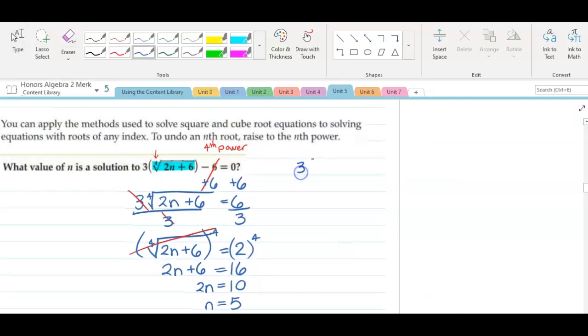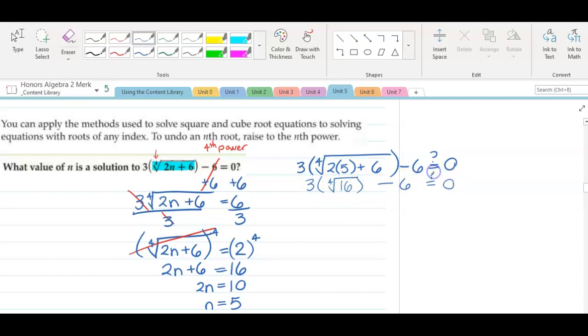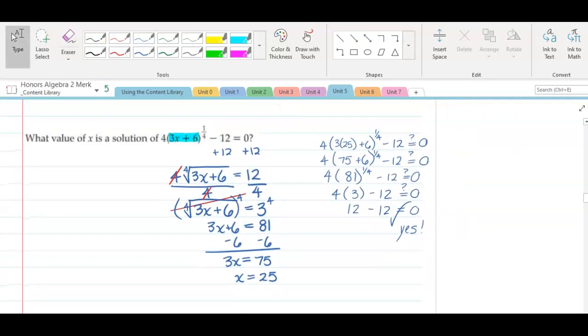We must check it though. Three times the fourth root of two times five plus six, take away six. Does this equal zero? Three times the fourth root of 16, take away six equals zero. I've already worked out the next example. You can see here that I isolated the radical or I should say isolated the quantity to the rational power. Since it's not actually the radical written right here on the problem. I got x equals 25 for an answer and when I checked it, it worked.